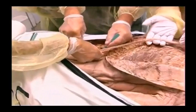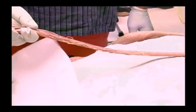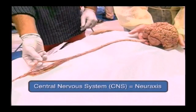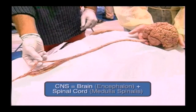Here you can see how the CNS is separated from a preserved body. The central nervous system, also known as the Neuraxis, is made up of the brain and the spinal cord. The brain is in turn made up of the cerebrum, cerebellum, and the brain stem. The brain, brain stem, and spinal cord all come under the CNS.